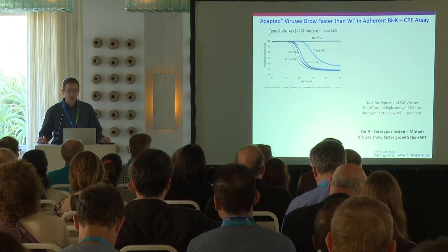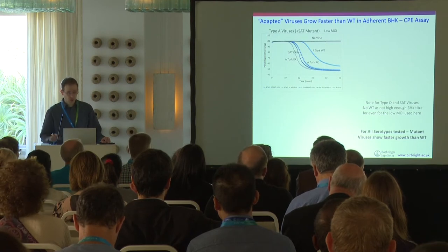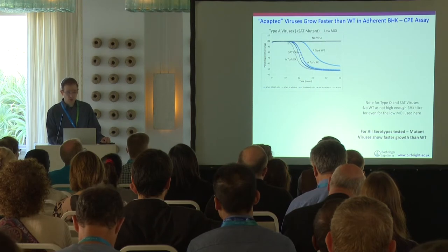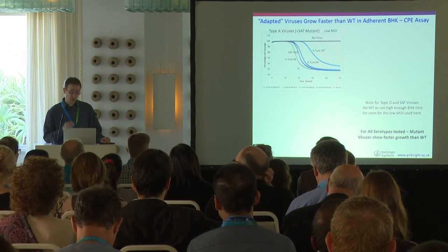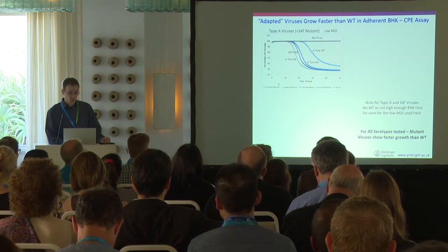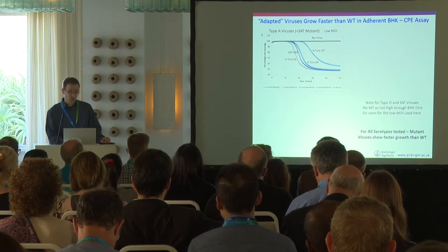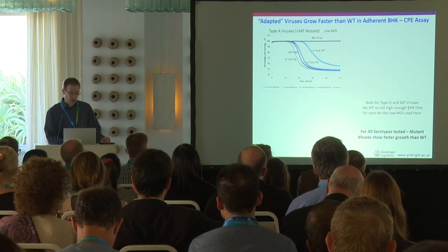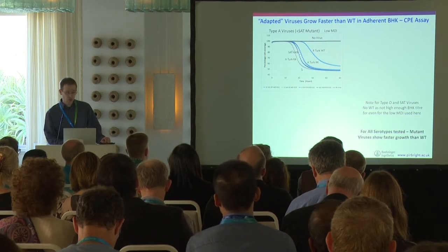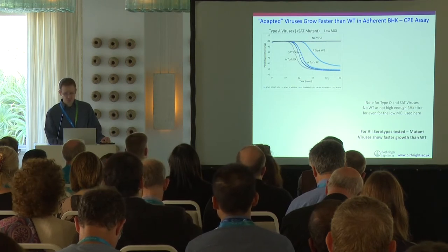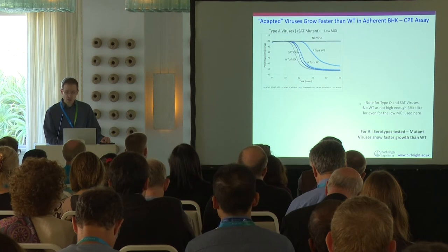In order to look at the relative rates of growth of these viruses, we did some CPE assays looking at the rate of CPE of the various viruses in adherent BHK cells. Along the X-axis is time, and on the Y-axis is the percentage cell coverage in the well. As CPE develops, the curves go down, so the quicker the curve goes down, the quicker the CPE.